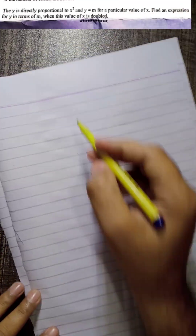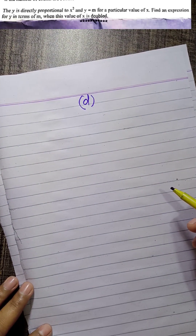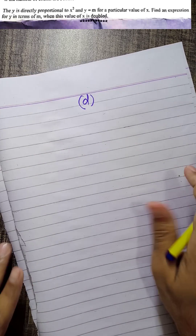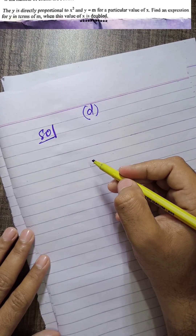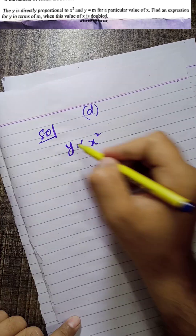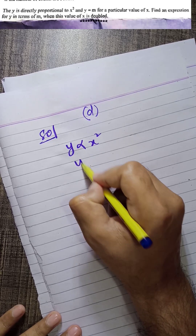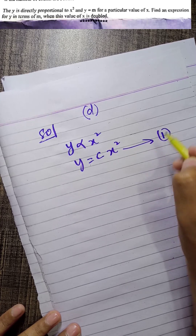Question number 8, Part D: y is directly proportional to x squared, and y is equal to m for a particular value of x. Find an expression for y in terms of m when this value of x is doubled. Let's solve. Since y is directly proportional to x squared, we write y = c·x², where c is a constant. Let this be equation 1.